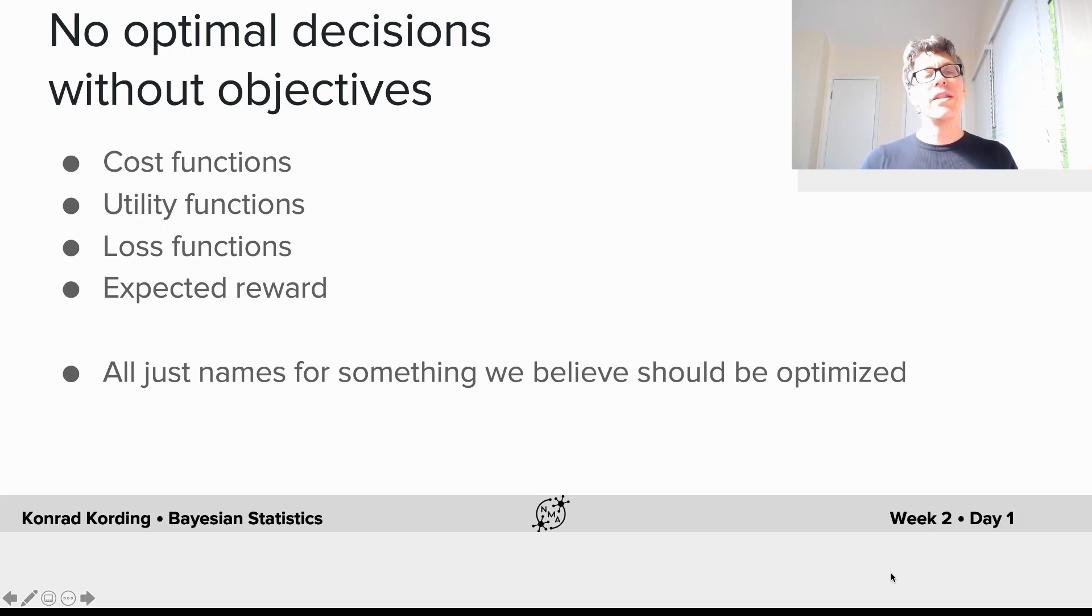Because they're so important, they're given different names. We call them cost functions, or utility functions (the opposite of cost), loss functions, or expected rewards.